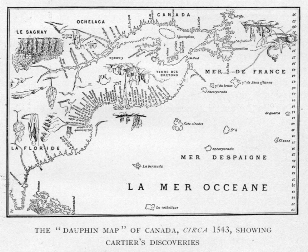In Inuktitut, one of the official languages of the territory of Nunavut, the First Nations word is used, with Inuktitut syllabics. The first French colony of Canada, which formed one of several colonies within New France, was set up along the Saint-Lawrence River and the northern shores of the Great Lakes.